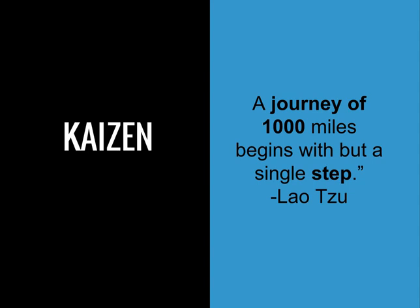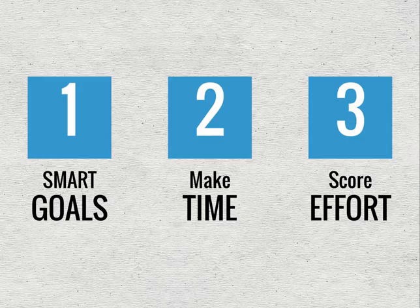Make small steps toward improvement, and over time you end up with a huge result. I'm going to show you how I apply that process of Kaizen to my goal setting. It's really three major steps: I create SMART goals, I make time to achieve those goals, and I actually score my effort.